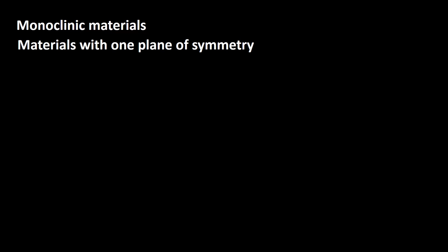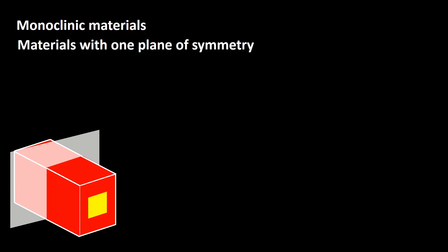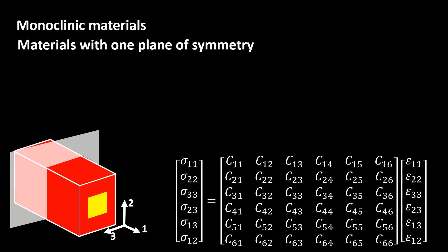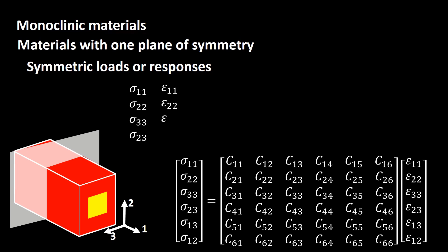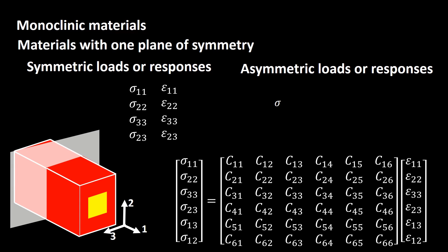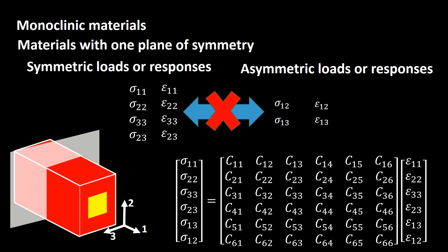Monoclinic materials, as a subset of anisotropic materials, have one plane of symmetry. As an example, consider a combination of two materials that is symmetric with regards to planes whose normal vector is parallel to the first axis. Starting from the general stiffness matrix, we investigate symmetric and asymmetric loads with respect to the plane of symmetry. Symmetric loads contain normal stresses and strains in all directions and shear stress and strain in the plane of symmetry, while asymmetric loads include shear stresses and strains in planes perpendicular to the plane of symmetry. When the material is symmetric, a symmetric load produces a symmetric response, so symmetric and asymmetric loads cannot be connected in the stiffness matrix.